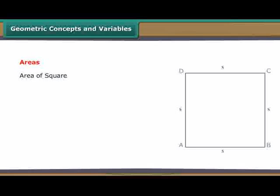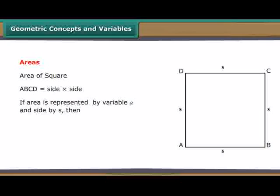Area of square ABCD is equal to side into side. If area is represented by variable A and side by S, then A is equal to S into S.